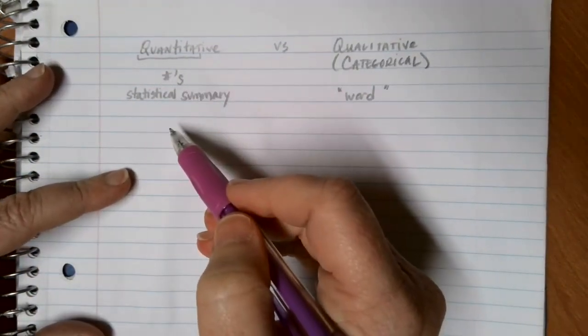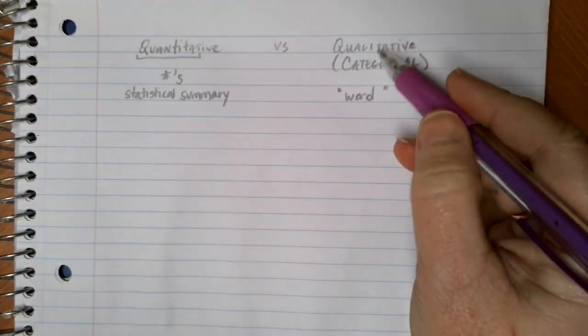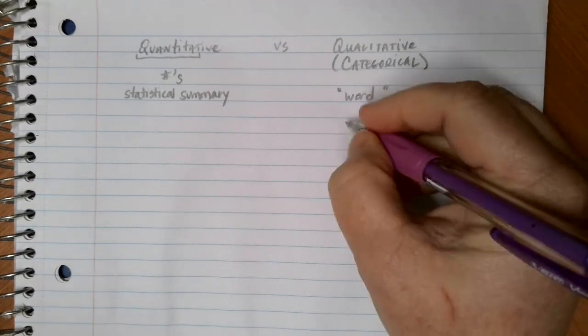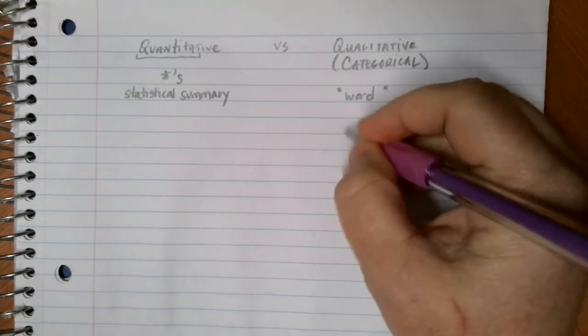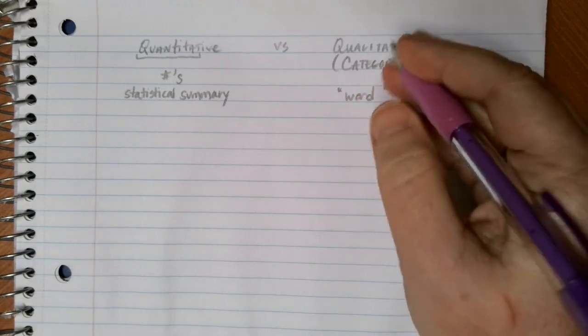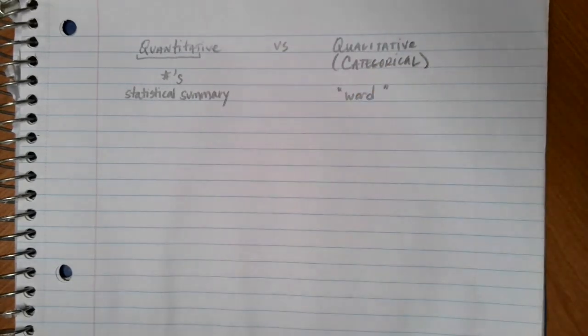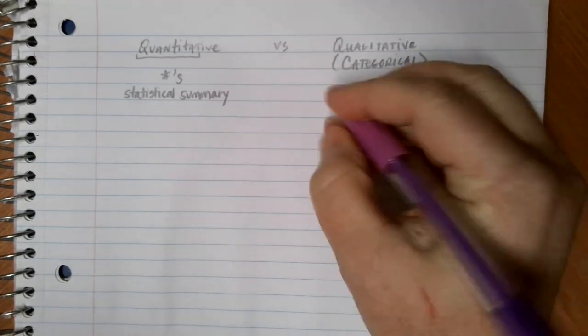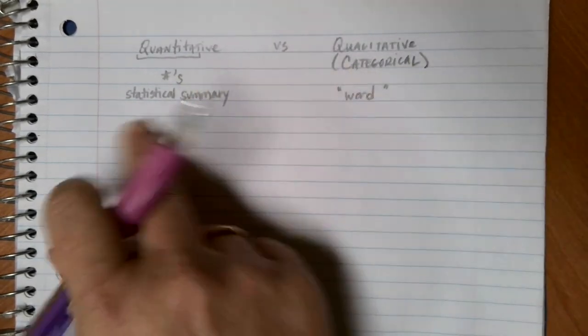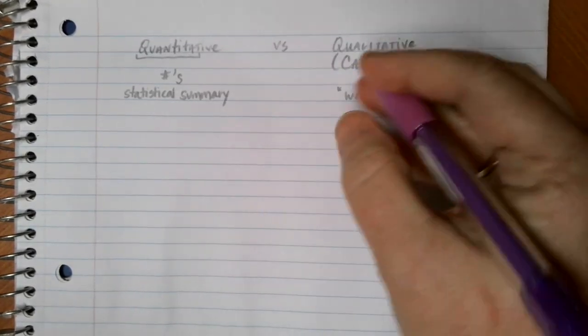When we're talking about qualitative or categorical data, really the only thing that we can get is a grand total. We can find like a percentage of yes and a percentage of no, and so the types of statistics that we can do are just different. We can't do quite the same things with words that we can do with a statistical summary of some type.